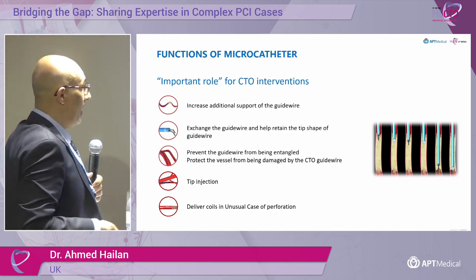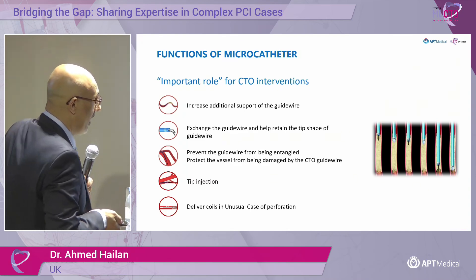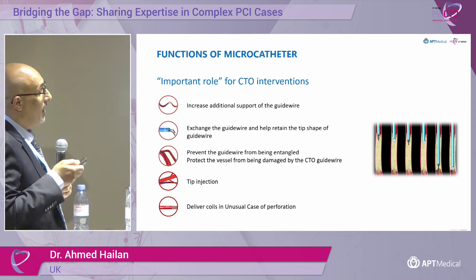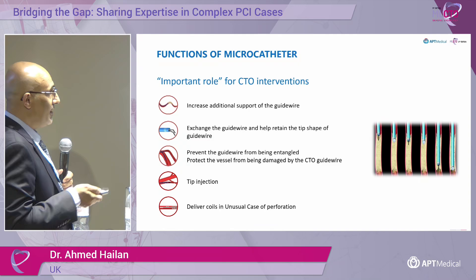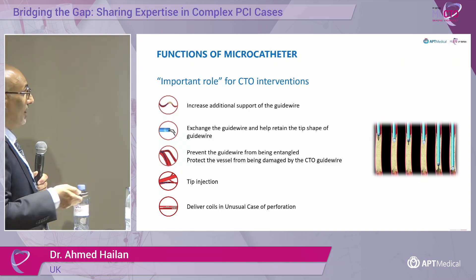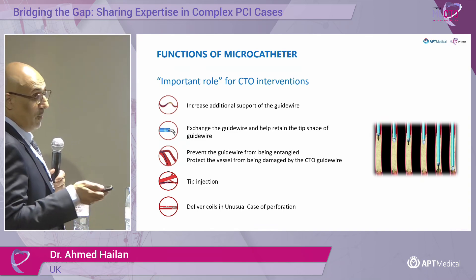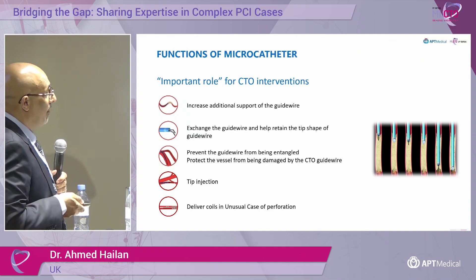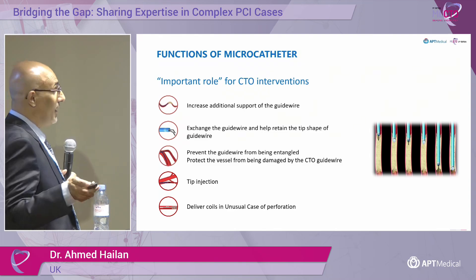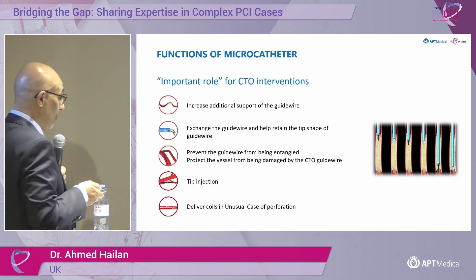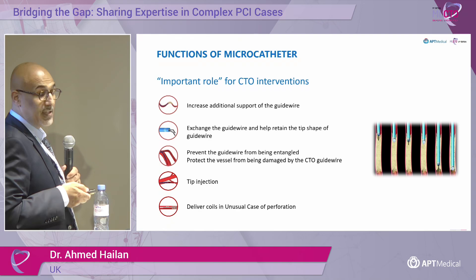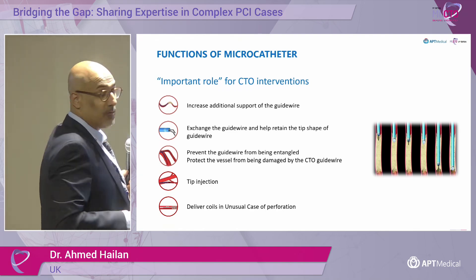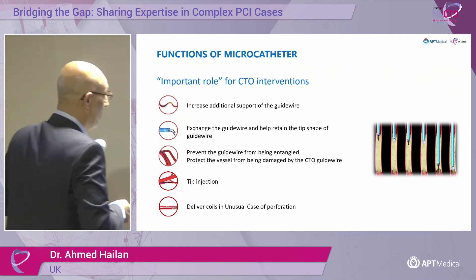In complex PCI and CTO, microcatheters provide additional support to guidewires, enable wire exchange, and prevent entangling of wires in stents or calcium. They prevent damage to coronary arteries from CTO wires. Importantly, sometimes you use them for tip injection in both complex and non-complex cases, to deliver medication to the tip, or to highlight the distal size of the artery. They're also very useful for coiling or fat embolization in the event of coronary perforation.